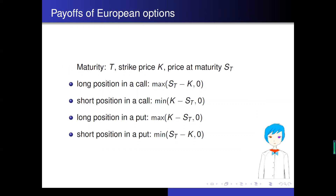We also introduced the payoffs of European options. Suppose the maturity is T, the strike price is K, and the price at maturity is S(T). The payoff for the long position in a call is the maximum of S(T) minus K and zero. The payoff for the short position in a call is the minimum of K minus S(T) and zero, which equals minus the maximum of S(T) minus K and zero.